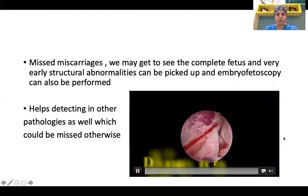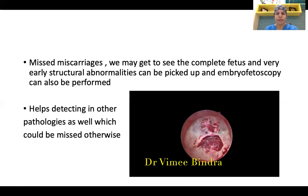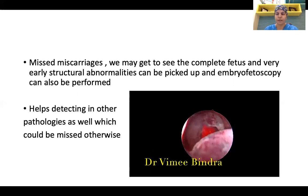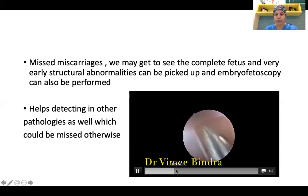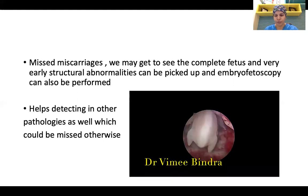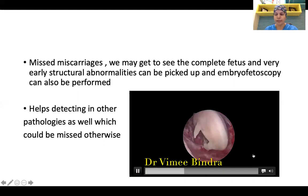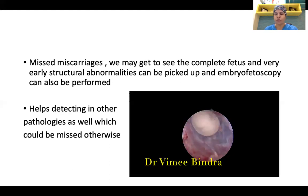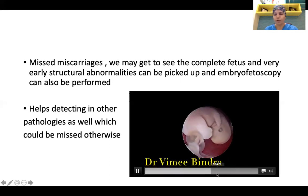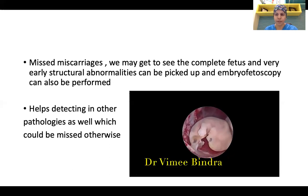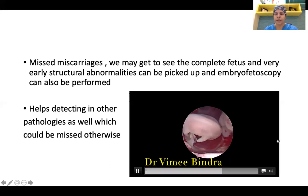Additional advantages of this procedure: we also use it in missed miscarriages where we may see the complete fetus and pick up very early structural abnormalities, and embryo fetoscopy can be performed. It also helps in detecting other pathologies which could be missed otherwise. In one case, the patient had a miscarriage at around 9 to 10 weeks of pregnancy, and instead of giving pills we directly posted her for hysteroscopy to evaluate the fetus structurally. Once you expel or perform D&C, you cannot examine the fetus completely and may miss important information.